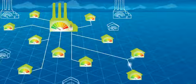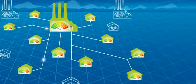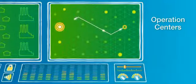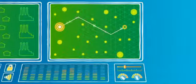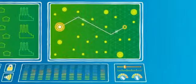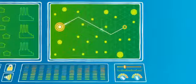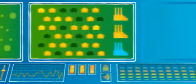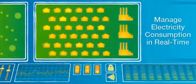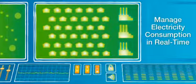The power being used right now was generated less than a second ago, many miles away. At each instance, the amount of electricity generated must equal the consumption across the entire grid. Smart grid technologies provide detailed information that enables grid operators to see and manage electricity consumption in real time.